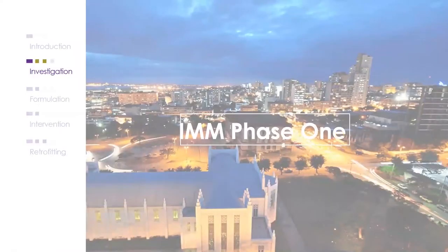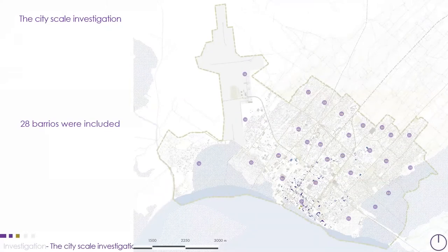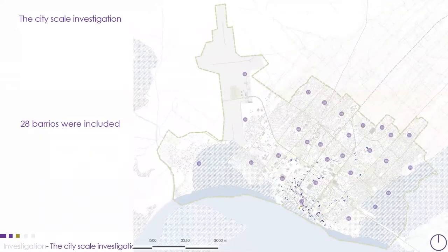In IMM phase one, we defined the perimeter of the study area at the city scale level. We included 28 barrios, or neighborhoods, out of 54 barrios in the whole city of Kilimani.